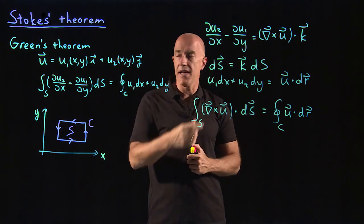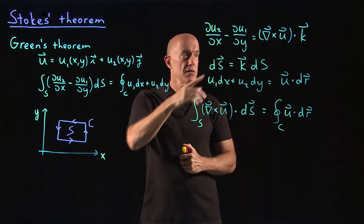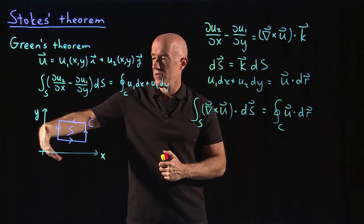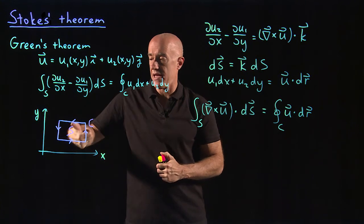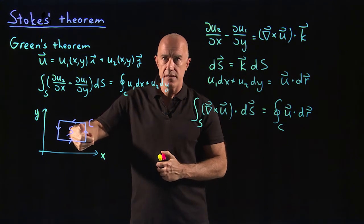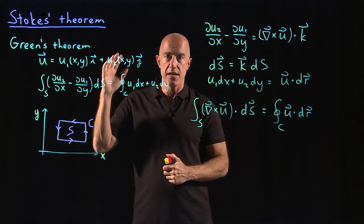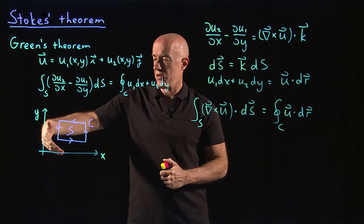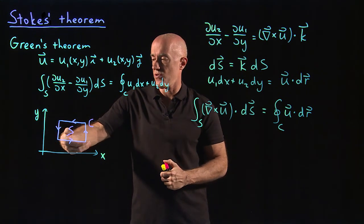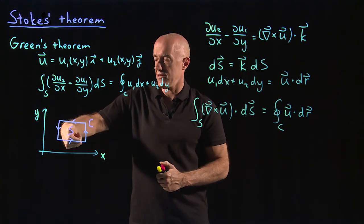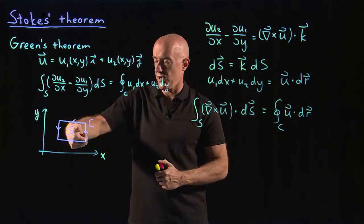Here del cross u, k is i cross j equals k. So the k direction is coming out of your screen. You use the right hand rule: put your fingers in the i direction and cross it into the j direction, so k comes out of the screen.